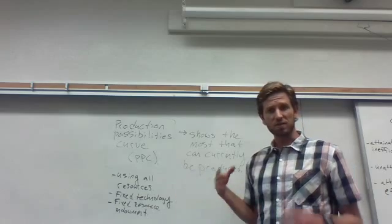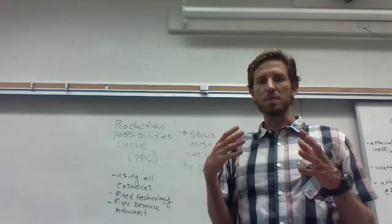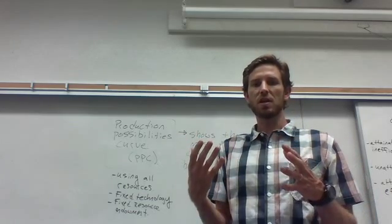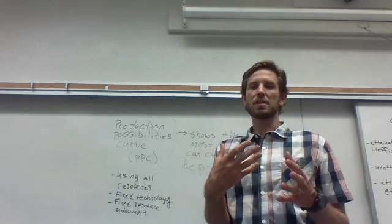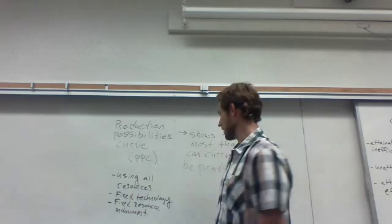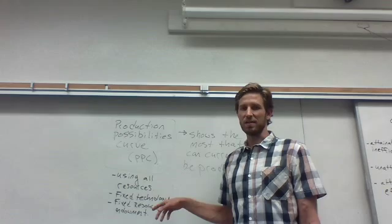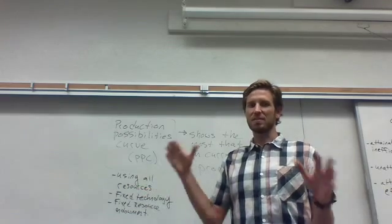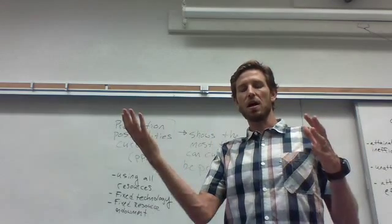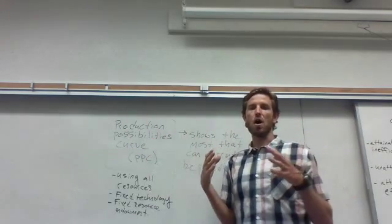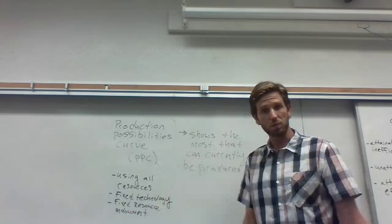Secondly, we're going to assume that there's a fixed technology. And fixed technology here just means that the process that's used to make these various products is locked in place. So we draw this line based on what we know about these production techniques presently. Third thing that we're going to assume here is that nations have what's called a fixed resource endowment. What that means is that we draw it based on what we know about the amount of labor that this nation has, the amount of machinery that it has. It's drawn based on our current knowledge of those factors of production.